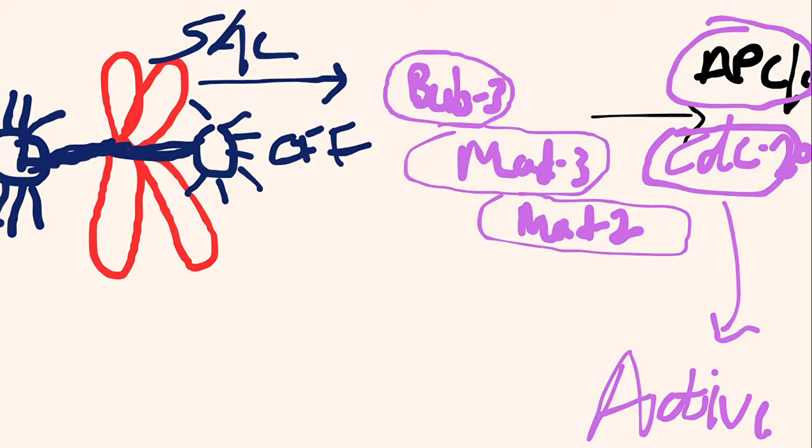When SAC complex is off, then what will happen? CDC20 will attach to APC complex. And as soon as it attaches, the anaphase promoting complex, APC complex will become active. And the cell will get entry to anaphase. This is the checkpoint scenario. We have seen here about SAC, spindle assembly complex. If SAC does not form properly, what can happen? We have seen. If SAC complex does not do its work function properly, aneuploidy can happen.